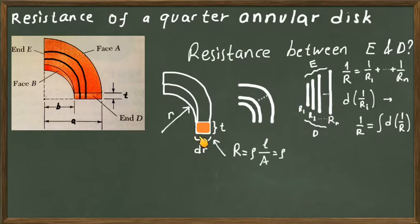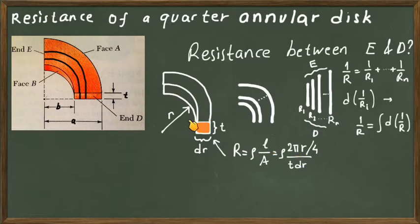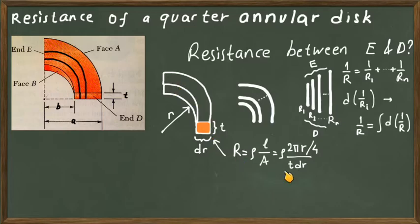Let's express the resistance of this slice of a quarter ring using the given parameters. The general expression for resistance is resistivity rho times the length divided by the cross-section area. The length, taking r as the radius of the quarter ring, is 2πr divided by 4 — which is one quarter of the circumference of a ring of radius r.